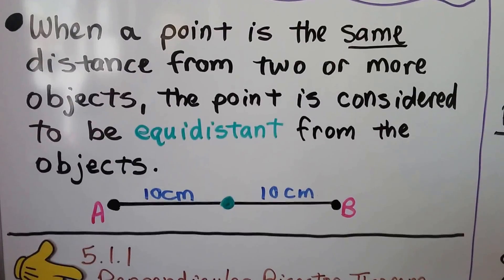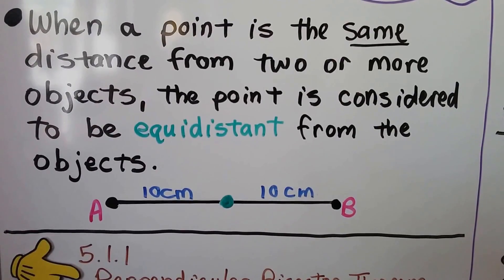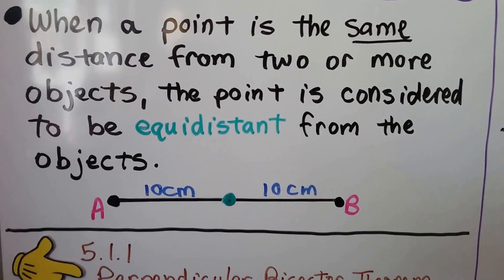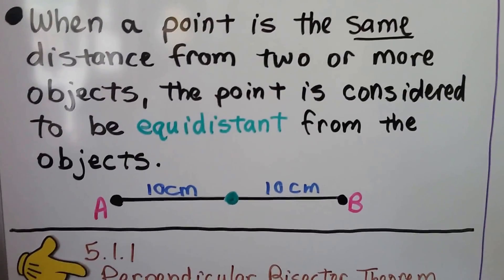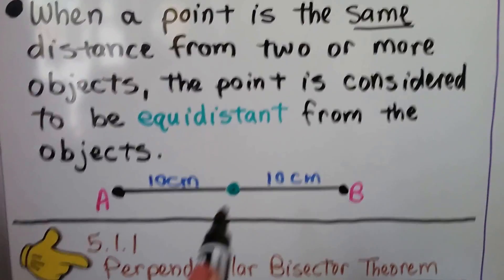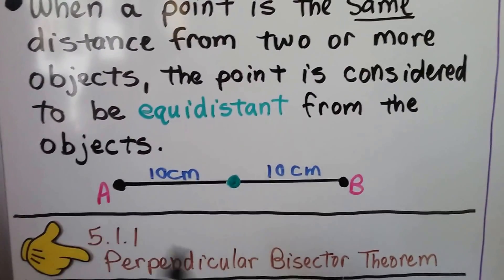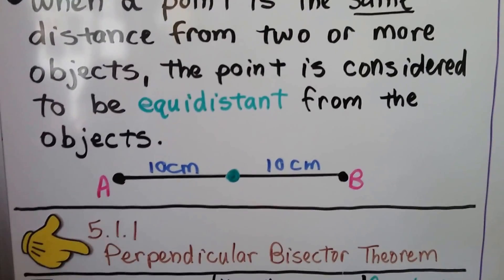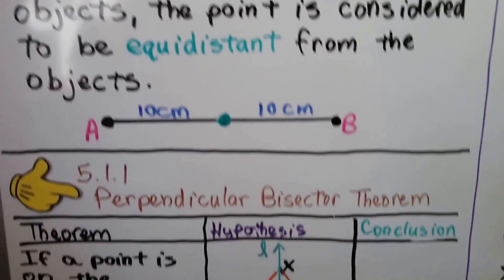When a point is the same distance from two or more objects, the point is considered to be equidistant from the objects. This green point is 10 centimeters from point A and 10 centimeters from point B, so it's equidistant from points A and B.